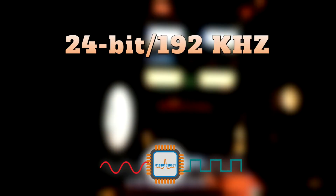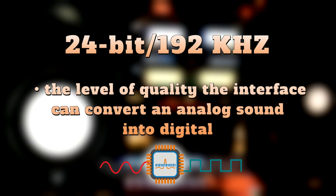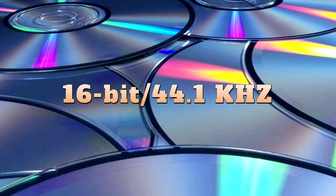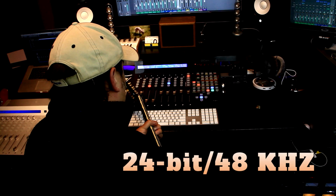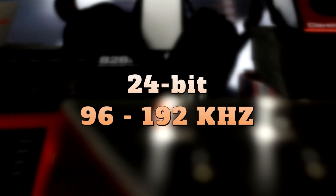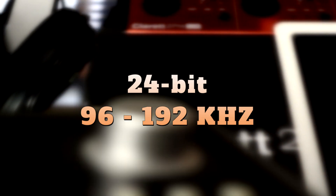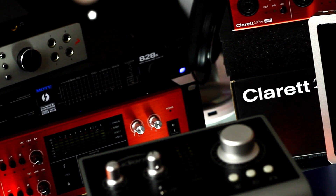You'll see numbers in the technical specifications like 24-bit 192 kHz. In simple terms, this is the quality at which the interface can convert an analog sound into digital. To gain a little perspective, CD quality is 16-bit 44.1 kHz. My sessions are recorded at 24-bit 48 kHz. Most new interfaces can convert as high as 24-bit 96 up to 192 kHz — that's well above the needs of most starter studios, but it's good to understand the capabilities of the device you will be acquiring.